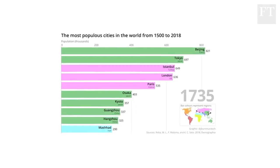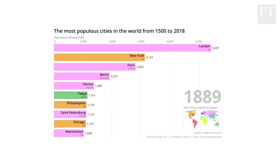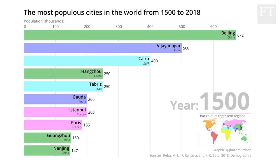You're looking at a bar chart race showing which cities had the largest populations at any time over history. We're going to start the race at 1500 AD.